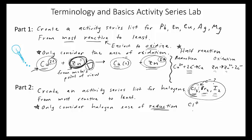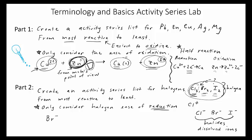A quick side note on the terms: we're going to be adding halides to these. These are halogens. When they carry a charge, these are halides. These are going to be in solution — dissolvable ions. We're going to be adding bromide ions, and these will actually be in the form of NaBr.